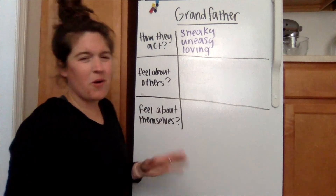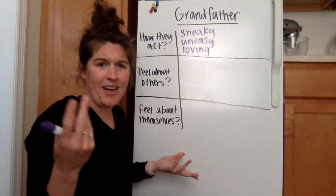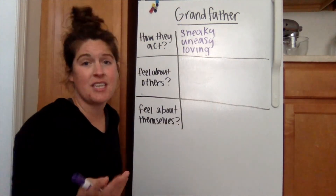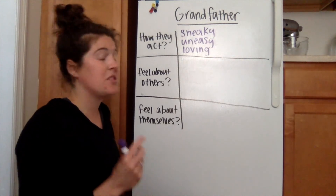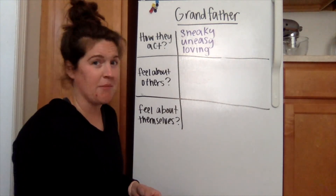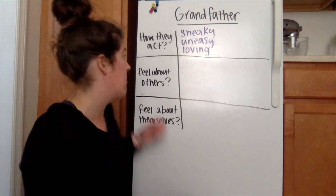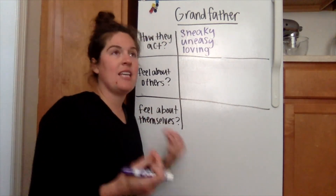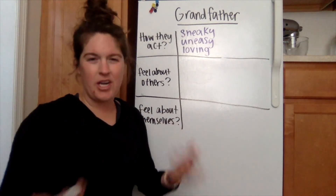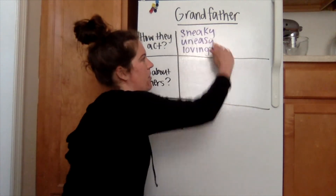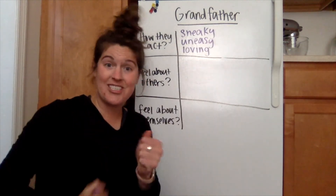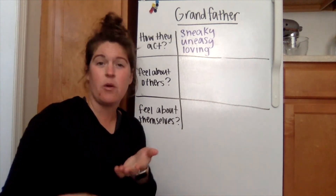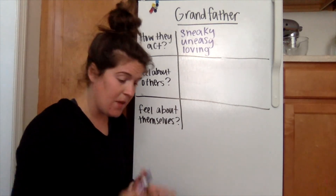Now, notice we're only in chapter one, so we're not going to have long lists of all these things because we're just being introduced to these characters. But it's a great way to start thinking and analyzing. We're going to learn a lot about them throughout the book. I want you to think about how does that character act and how do I know it. I didn't just write those three words and smile — I supported each one with text evidence. That's something we're going to expect you to do as well.